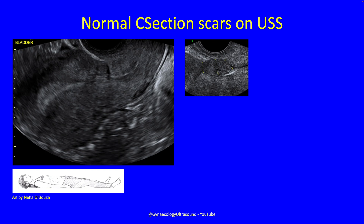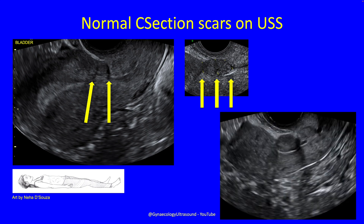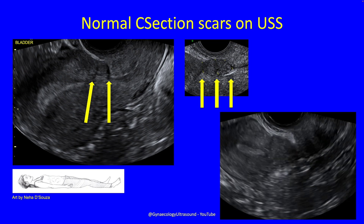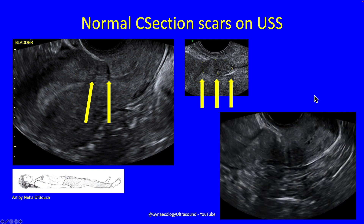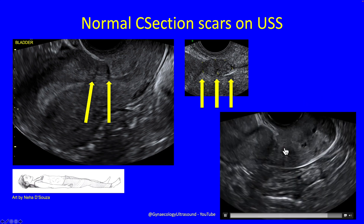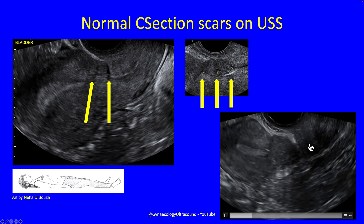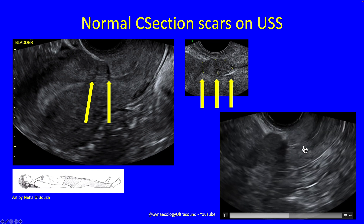So what does a normal section scar look like on ultrasound? This is a longitudinal view of the uterus — there's one section scar and there's another. This patient has had three caesarean section scars. This is a little video clip of two caesarean section scars; you can see one is there and one is there, and the internal os of the cervix is just about there.